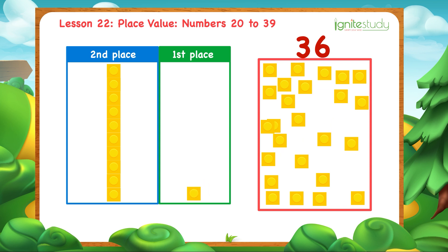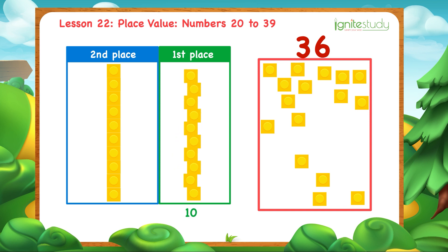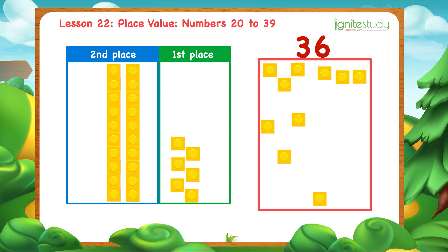Continue: 1, 2, 3, 4, 5, 6, 7, 8, 9, 10. Again, we have 10 blocks. Let's group them together. Then, move the group to the second place. Then, continue to put blocks into the first place: 1, 2, 3, 4, 5, 6, 7, 8, 9, 10.